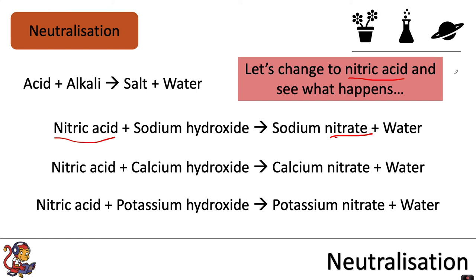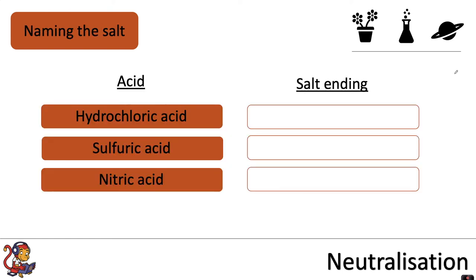Here's the really important rule to write down when naming salts in neutralization reactions: hydrochloric acid will make a salt ending in chloride; sulfuric acid will make a salt ending in sulfate; and nitric acid will make a salt ending in nitrate.